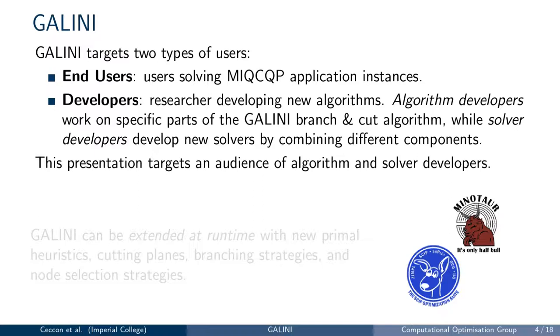Algorithm developers are interested in changing only specific parts of the optimization algorithm, for example by adding new cutting planes and testing how they interact with a branch and bound algorithm.